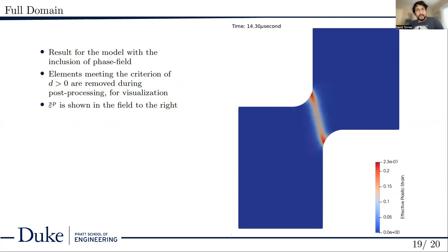Here, we look at the results after the inclusion of phase field physics. The plastic strain field is still shown, but elements with a damage value of over 0.9 are removed in post-processing. This is purely visual and no element deletion is done during the course of the simulation.